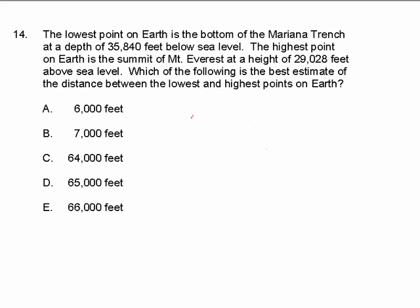We're on the CSET best practice exam, mathematics section, question number 14. The lowest point on earth is the bottom of the Mariana Trench at a depth of 35,840 feet below sea level. The highest point on earth is the summit of Mount Everest at a height of 29,028 feet above sea level. Which of the following is the best estimate of the distance between the lowest and highest points on earth?